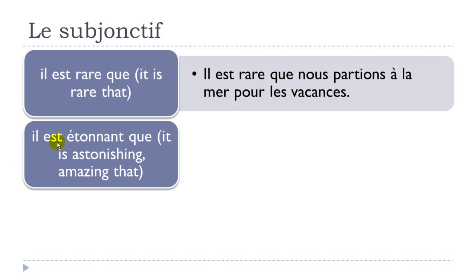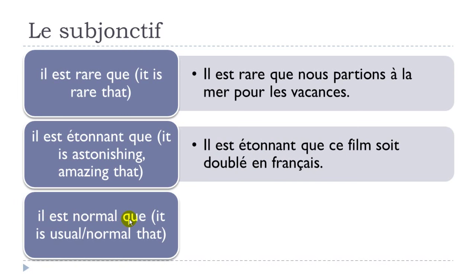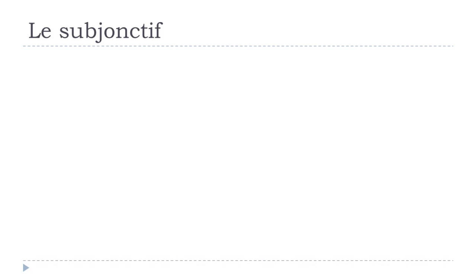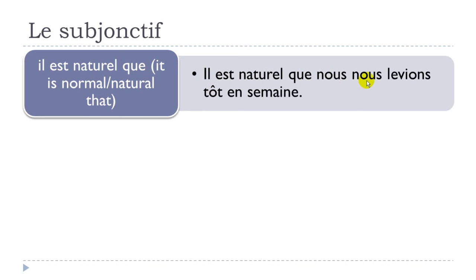Il est étonnant que — it is astonishing, amazing, that — il est étonnant que ce film soit doublé en français. Il est normal que — it is usual, normal, that — il est normal que tu apprennes à nager. Il est naturel que — it is normal, natural, that — il est naturel que nous nous levions tôt en semaine.